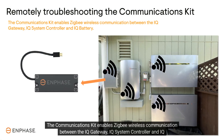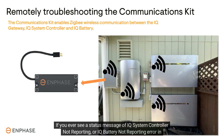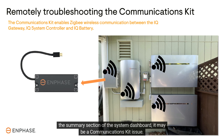The communications kit enables Zigbee wireless communication between the IQ gateway, IQ system controller, and IQ battery. If you ever see a status message of IQ system controller not reporting, or IQ battery not reporting error in the summary section of the system dashboard, it may be a communications kit issue.